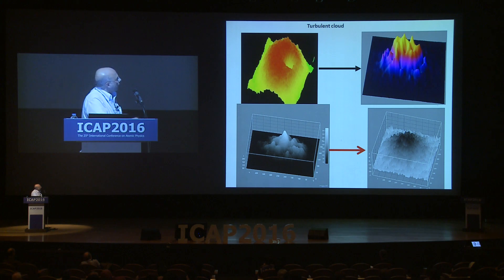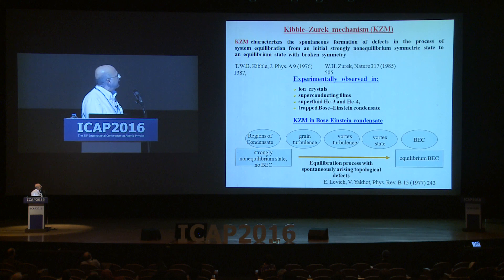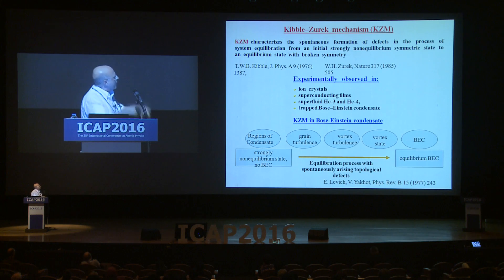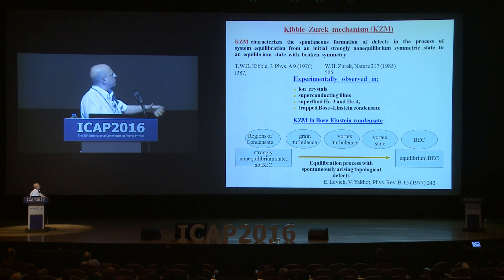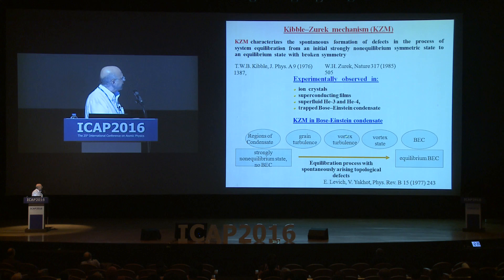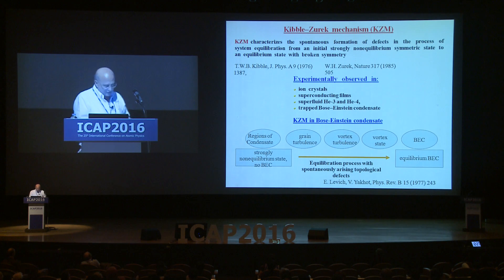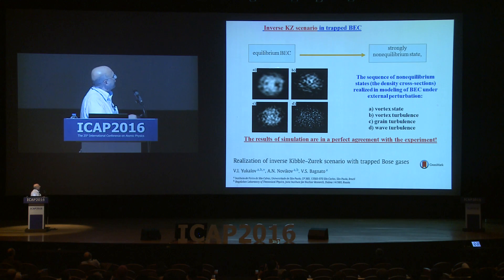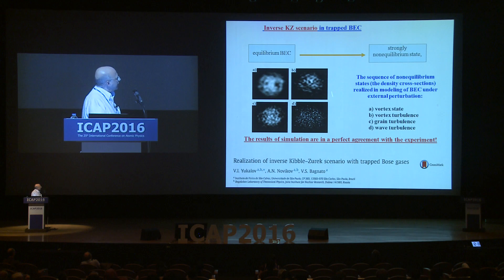This is analogous to the Kibble-Zurek mechanism. When you quench quickly through the condensate transition, you generate vortices and then the system equilibrates, passing through: regions of condensate, domains or grains, a vortex state, and finally equilibrium BEC. I think what we're doing is the opposite — what we call the inverse Kibble-Zurek scenario. I start with equilibrium BEC and by putting these excitations go to a strong non-equilibrium state — making vortices, then vortex turbulence, then grain turbulence, and finally wave turbulence.